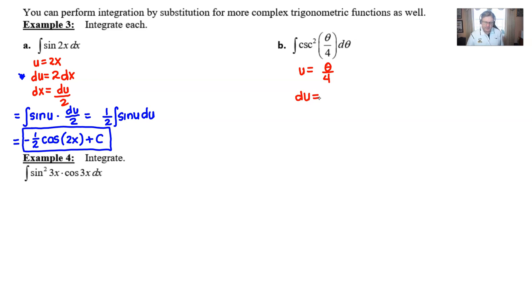When you take the derivative of theta over 4, you can just think of this as really one-fourth times theta, right? And you're taking this derivative with respect to theta, so you're just going to get one-fourth, right? Constant times the variable, the derivative is the constant.